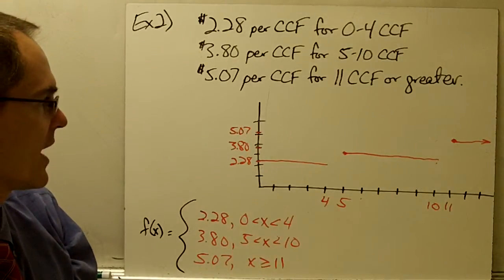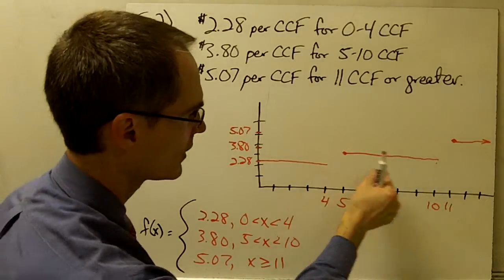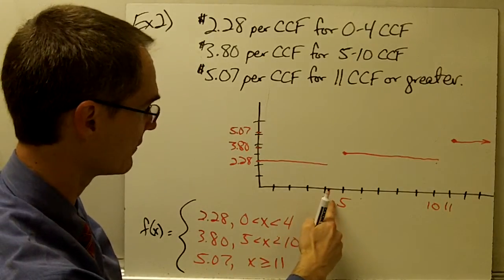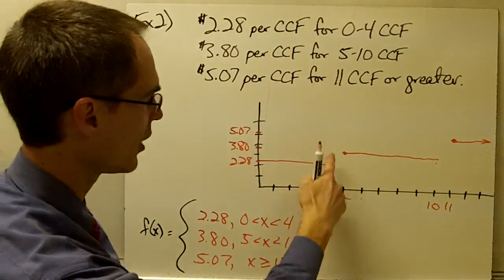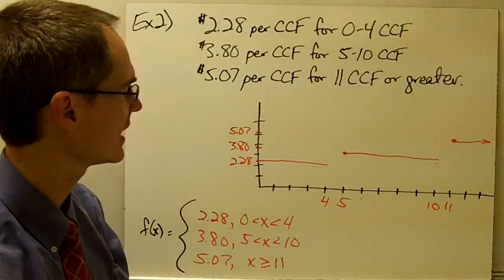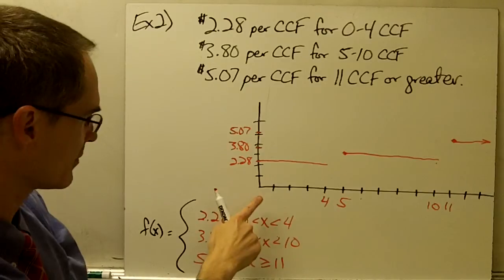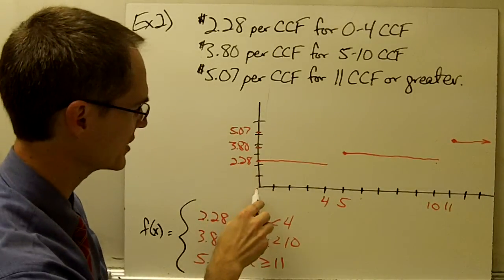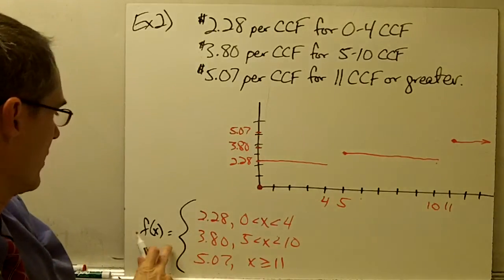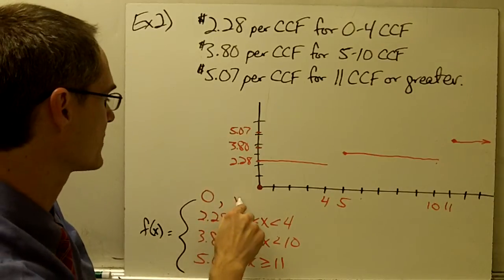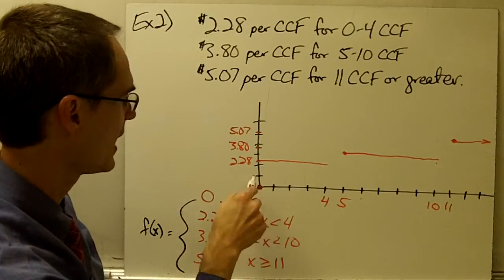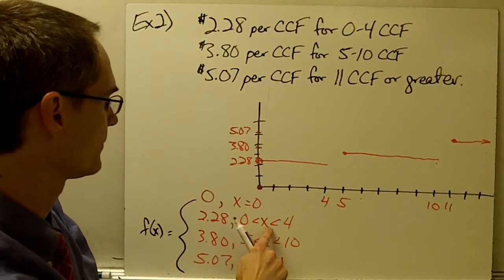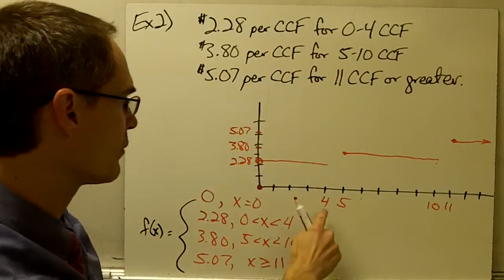I've got a couple of things I notice. I've got these gaps in my graph, which I'll have to take care of, because if somebody uses between 4 and 5 CCF of water, they're still going to be charged some amount. Also, it looks like from my graph that if I use no water at all, I'm still paying something — and I'm going to say that's probably not the case. If I use zero water, I'm going to pay zero dollars. So I'll add the point f of x equals zero when x equals zero. I'll put an open circle here to indicate that when x is greater than zero but less than 4 or 5, I pay $2.28 per CCF.